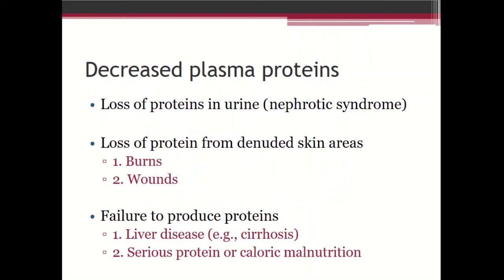The second Starling force involves plasma proteins, which determine plasma colloid osmotic pressure and keep fluid inside the capillary. Whenever plasma proteins decrease, it leads to excessive filtration of fluid outside the capillary. Causes of decreased plasma proteins include: loss of proteins in the urine — nephrotic syndrome; loss of protein from the skin in burns and wounds; and failure to produce proteins, since the liver is the main source of plasma proteins, so liver disease results in reduced protein production.